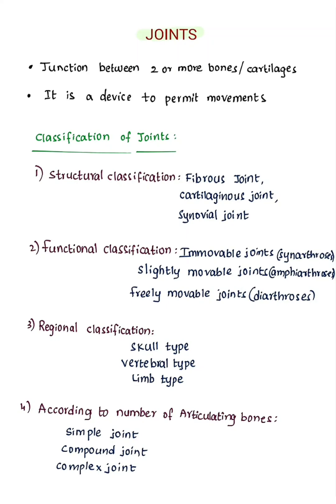Hi everyone, in this video we are going to learn about classification of joints. A joint is a junction between two or more bones or cartilages. It is a device to permit movements.